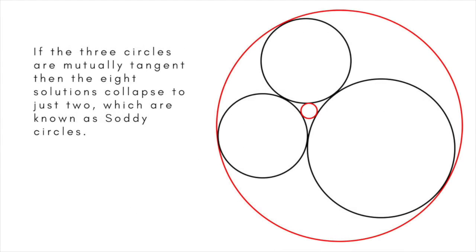Any of the eight circles that is a solution to the general three-circle problem is called an Apollonius circle. If the three circles are mutually tangent, then the eight solutions collapse to just two, which are known as Soddy circles.